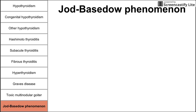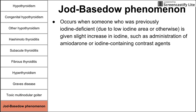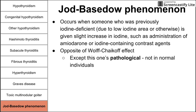Finally, the Jod-Basedow phenomenon occurs when a previously iodine-deficient person — from a low-iodine region — is given increased iodine through diet, amiodarone, or iodine-containing contrast agents. The body hoards the iodine and produces massive amounts of thyroid hormone, causing hyperthyroidism. This is essentially the opposite of the Wolff-Chaikoff effect — a physiologic mechanism turned pathological. That concludes this overview of thyroid diseases.